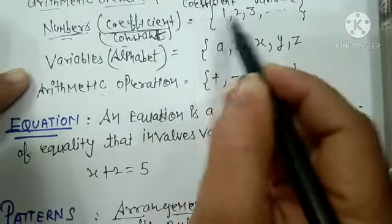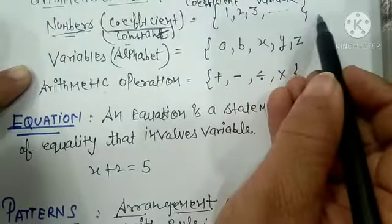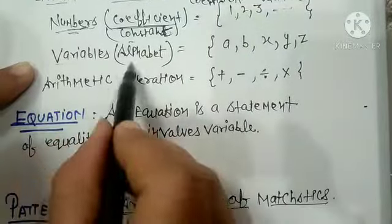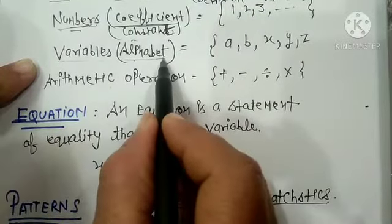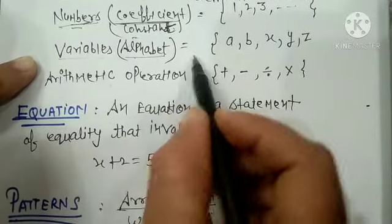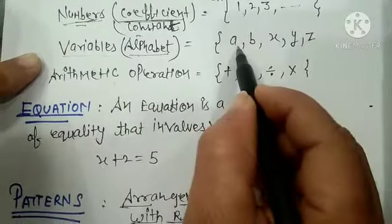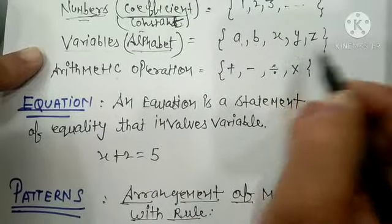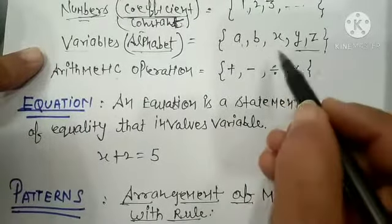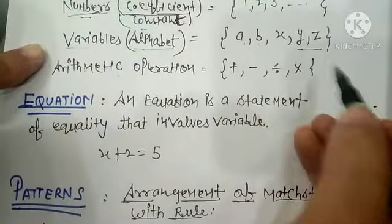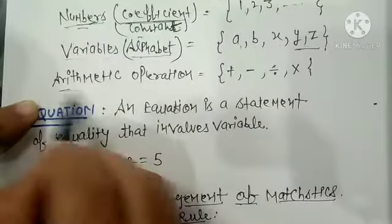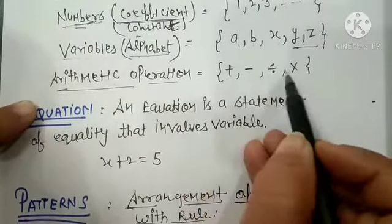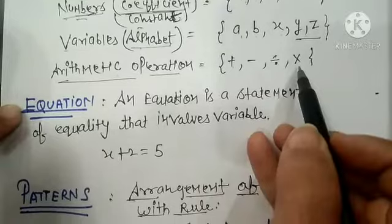First, numbers are written: 1, 2, 3, 4, 5. Next you will have variables. Variables are alphabets — they can be a, b, x, y, z — this is your choice. You can take l, m, n. There are also mathematical operations: plus, minus, multiplication, and division.